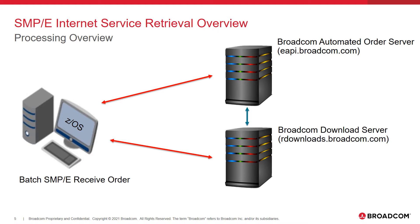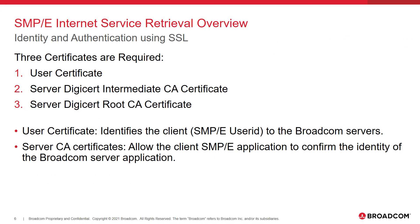For a high-level overview of how SMPE works behind the scenes: on the left we have a terminal user who submits a batch SMPE receive order job. It communicates to the Broadcom automated order server, which processes the request and stages a package file to the Broadcom download server. The order server provides SMPE with the information to authenticate to the CA download server and then download the package files. More specifically, the order server provides SMPE with the CA download server hostname and a temporary user ID and password for that server, which are unique for the specific package to be downloaded. SMPE then goes out to the Broadcom download server to download the maintenance. This process appears all as one step to the user submitting the job.